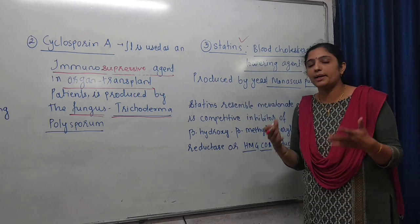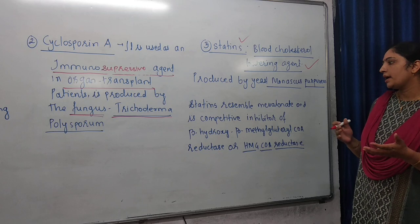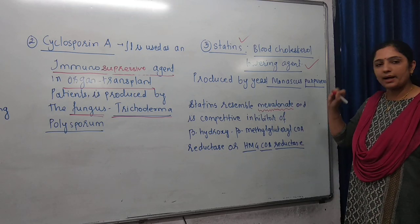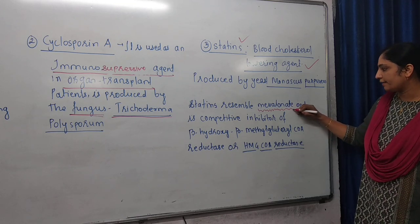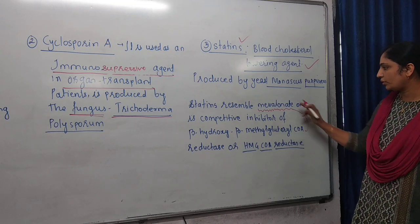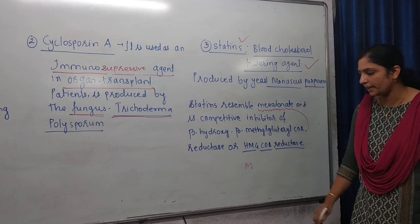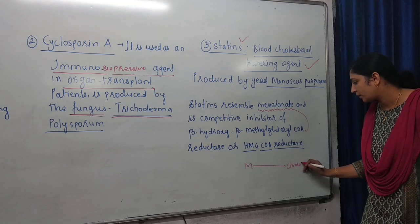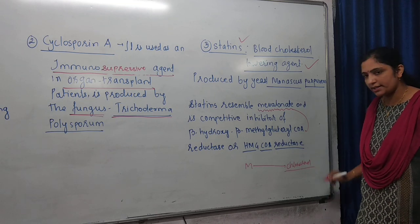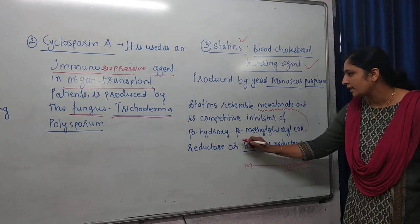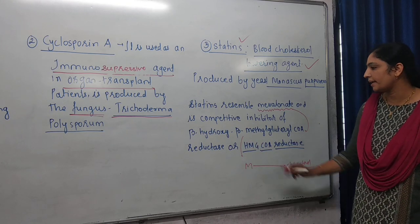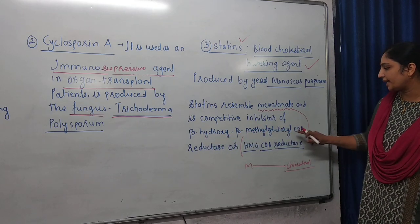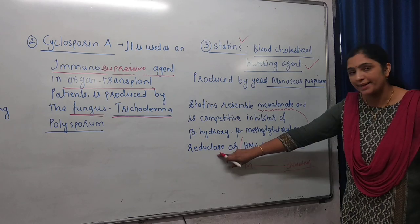Generally, when cholesterol is formed in our body, how is it formed? A substance called mevalonate is produced in our body. Its conversion happens with the help of an enzyme. There is a substance — mevalonate — whose conversion into cholesterol is carried out by an enzyme named beta-hydroxy-beta-methylglutaryl-CoA reductase, short form: HMG-CoA reductase.